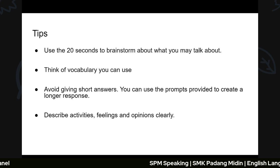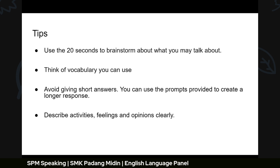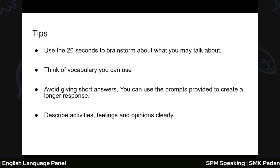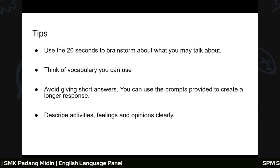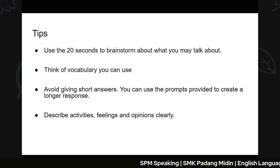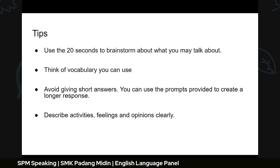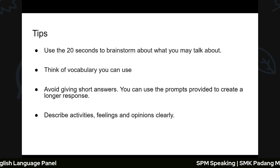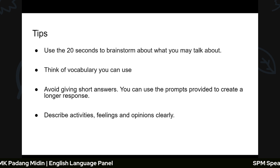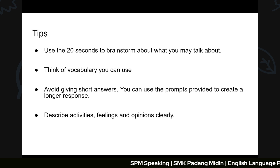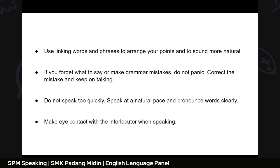Use the activity–feelings–opinion strategy. For example, on a family celebration: activity — 'We went to the beach for a family day and had a picnic.' Feelings — 'I felt really relaxed because I was stressed from SPM examinations.' Opinion — 'I think this is a good way for students to spend time with family and de-stress.' Then move to the next activity and repeat the same pattern.